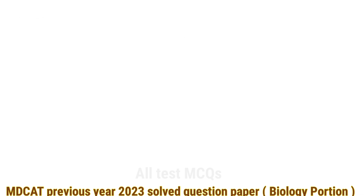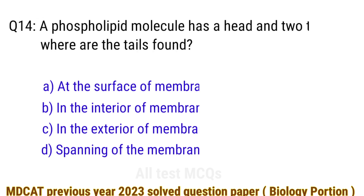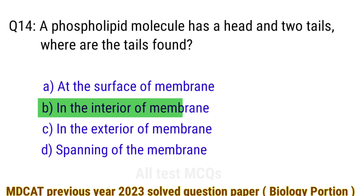Question number 14. A phospholipid molecule has a head and two tails. Where are the tails found? The right answer is option B: in the interior of the membrane.